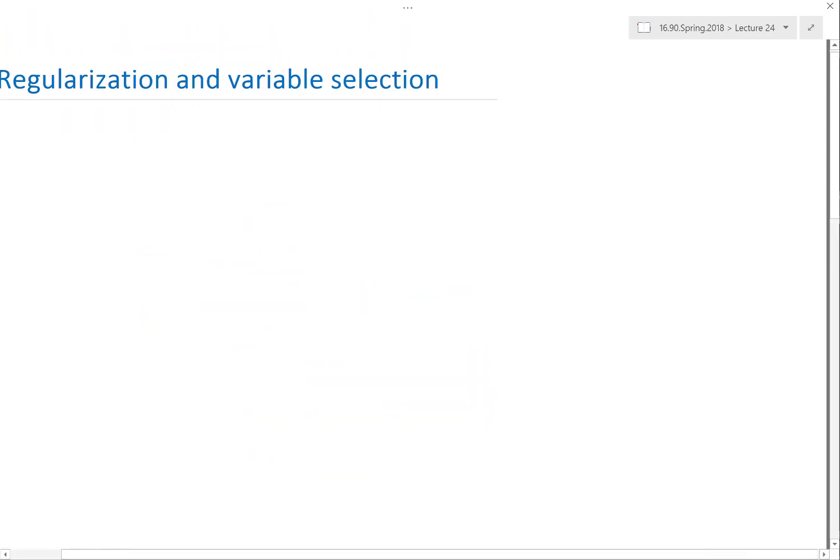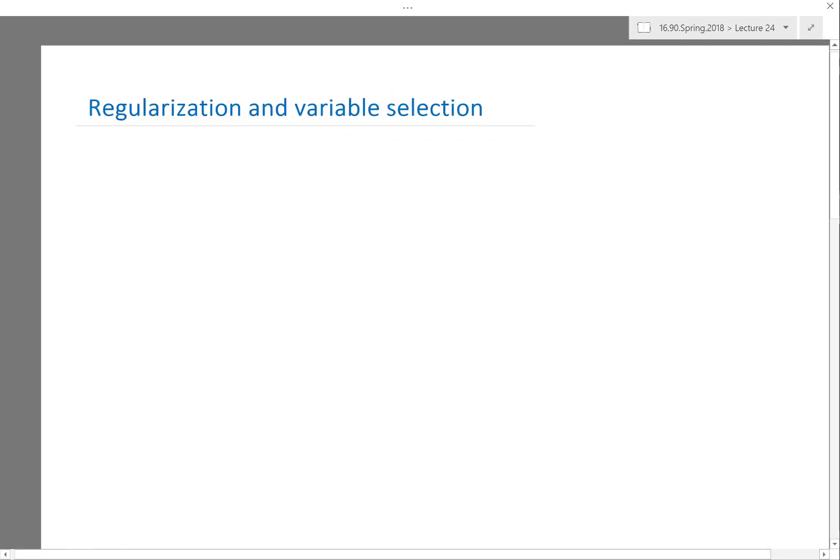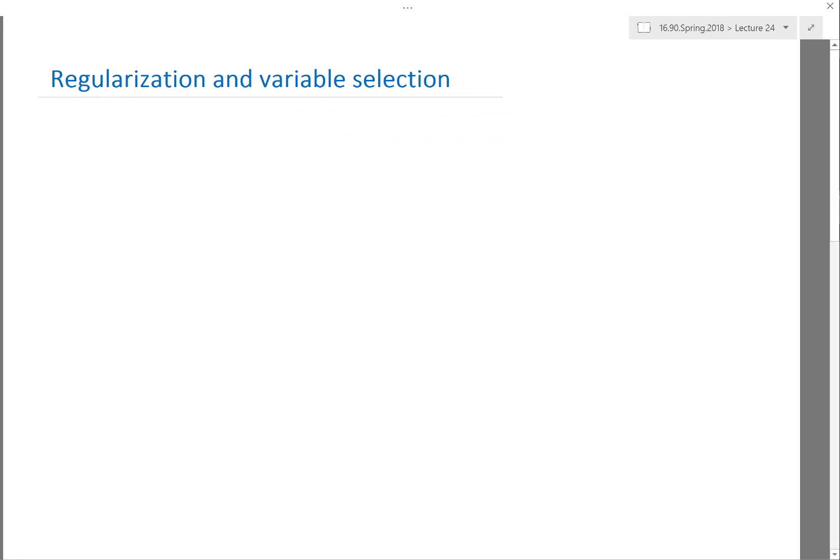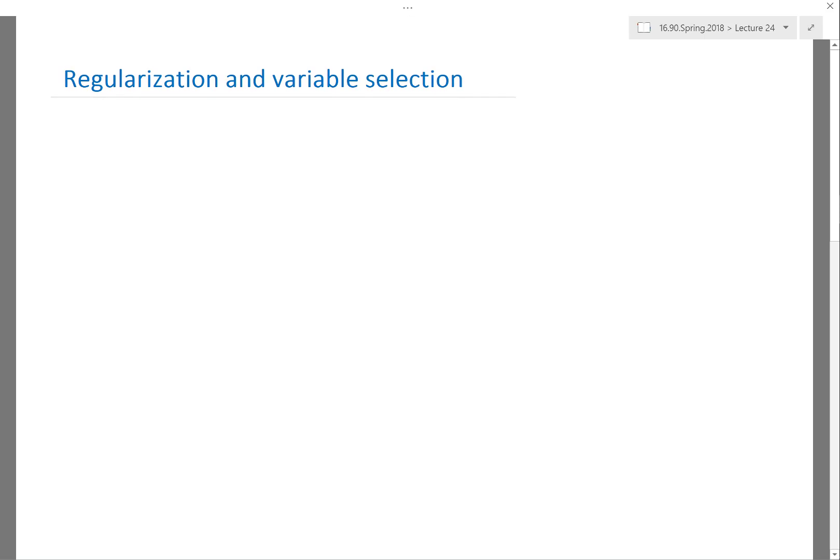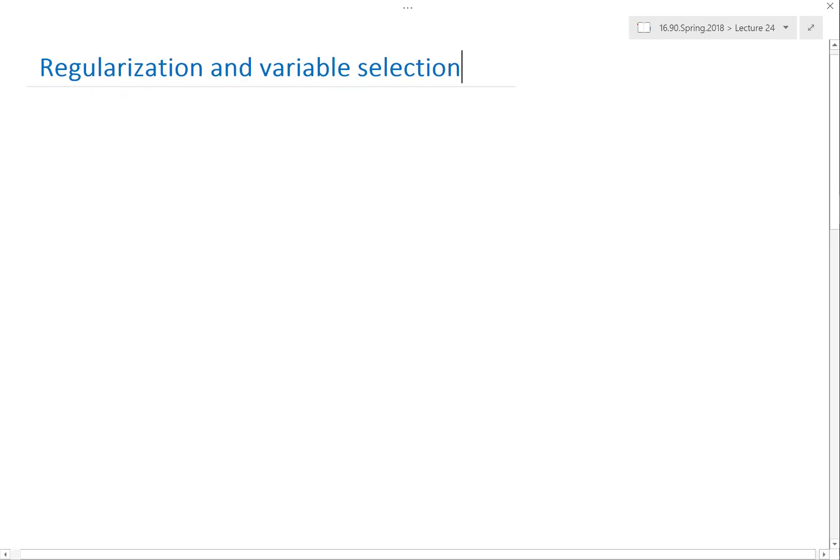The goal of this lecture is to tell you the kind of things that exist that you need to take into consideration when looking at such a problem. Regularization, which includes variable selection, is one of the primary concerns if you have a lot of predictors.